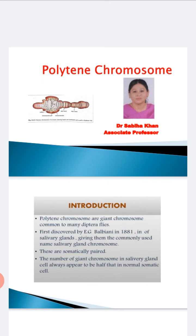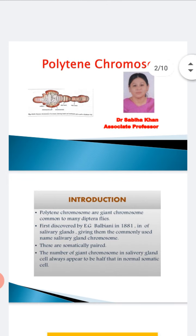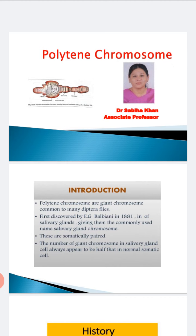Polytene chromosomes are oversize chromosomes that have developed from standard chromosomes and are commonly found in salivary glands of Drosophila melanogaster. They are giant chromosomes because they have very many rounds of DNA replication and are found in two-winged dipteran flies.